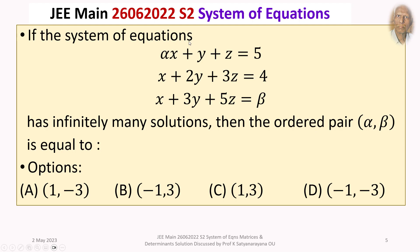We are given a system of linear equations in three unknowns x, y, z. The first equation is alpha x plus y plus z equals 5, the second is x plus 2y plus 3z equals 4, and the third is x plus 3y plus 5z equals beta. Given that this system has infinitely many solutions, we are required to find the ordered pair (alpha, beta) from the four given options.